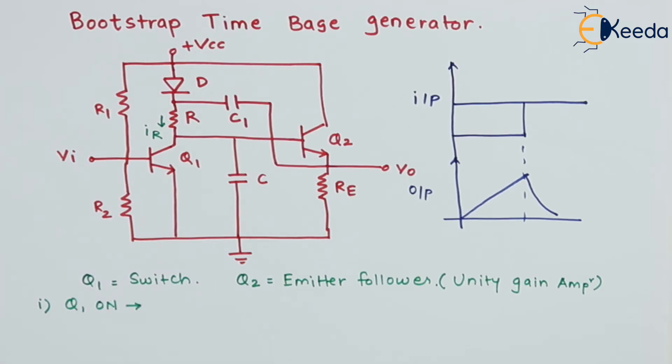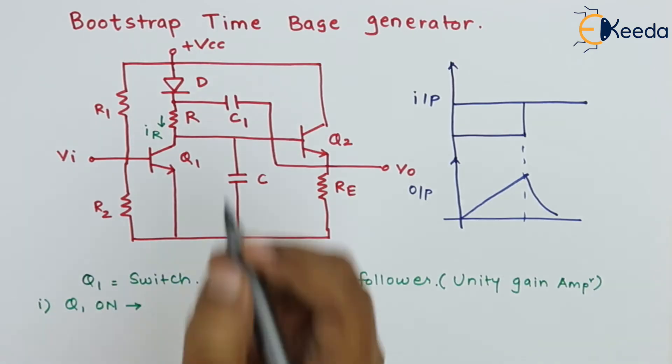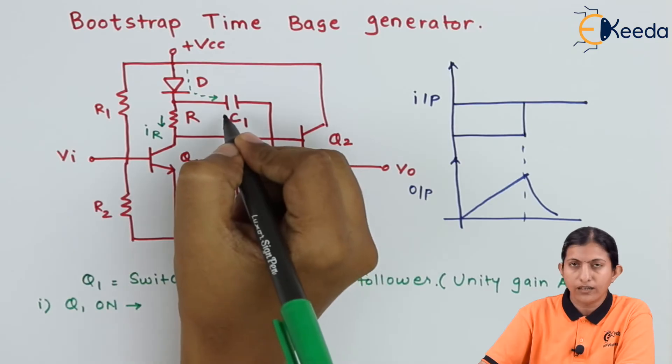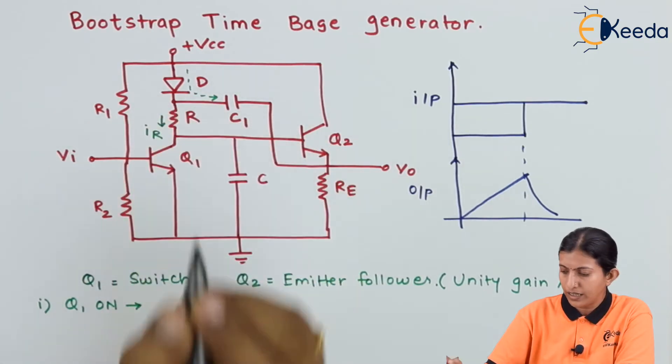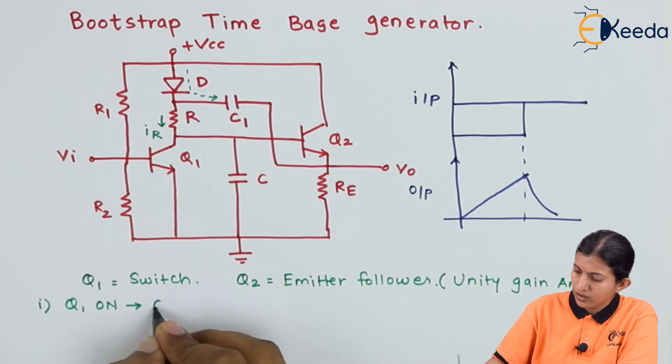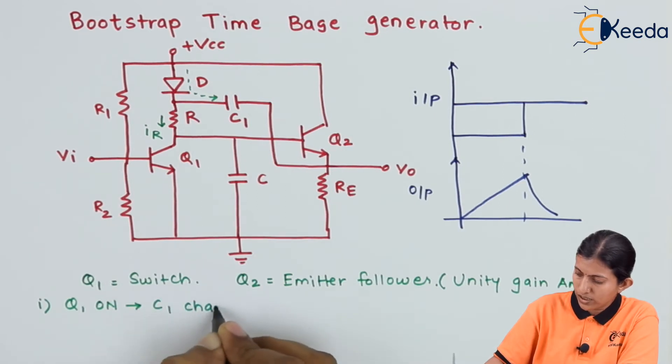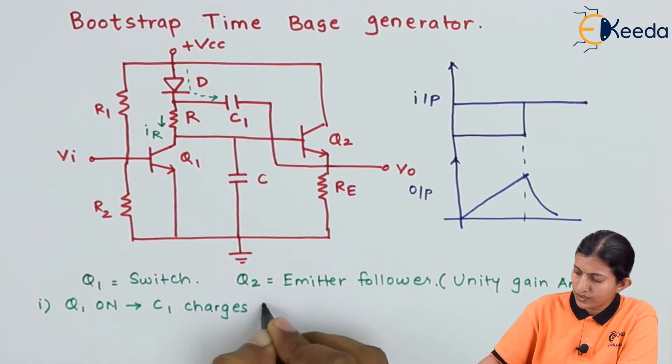When transistor Q1 is on, capacitor C1 will charge through the diode resistance D. So C1 charges up to VCC.